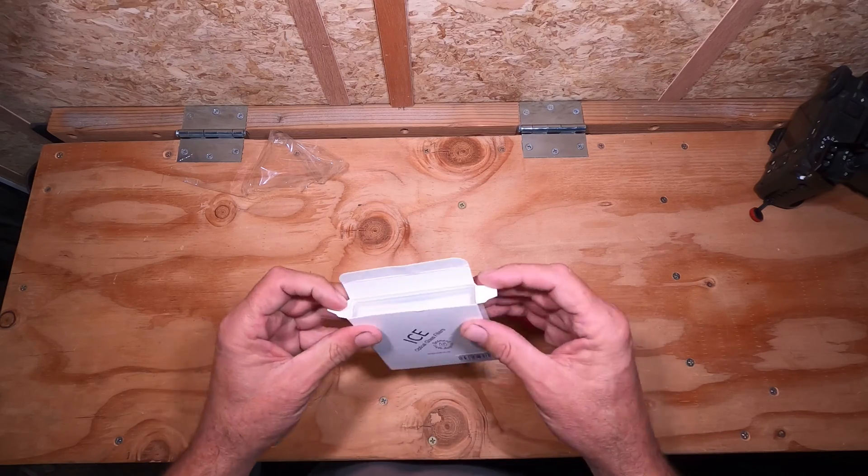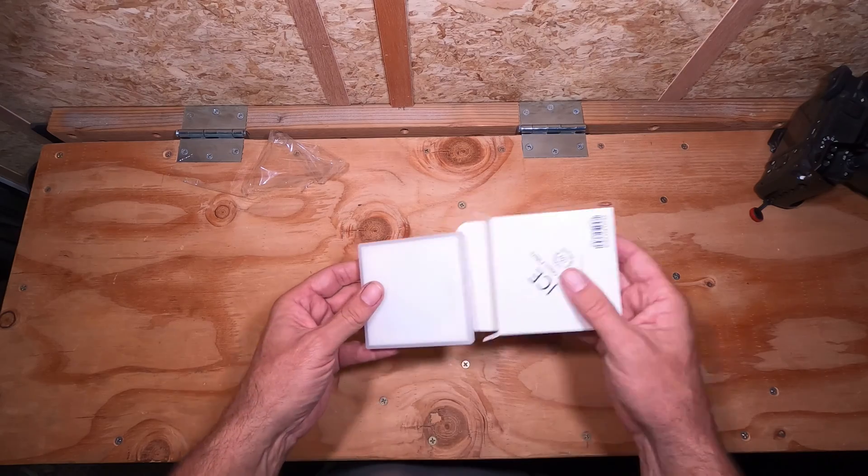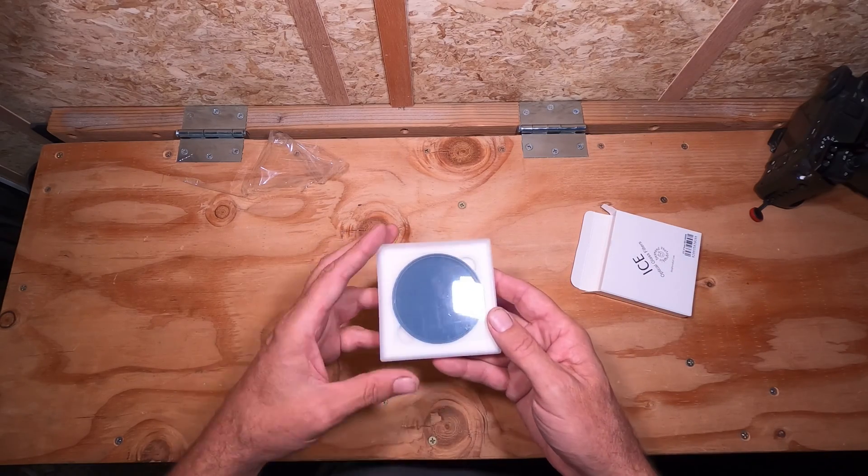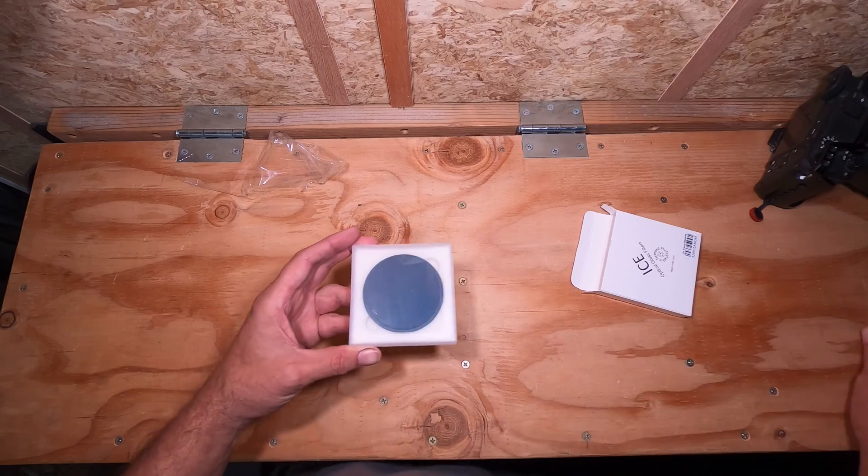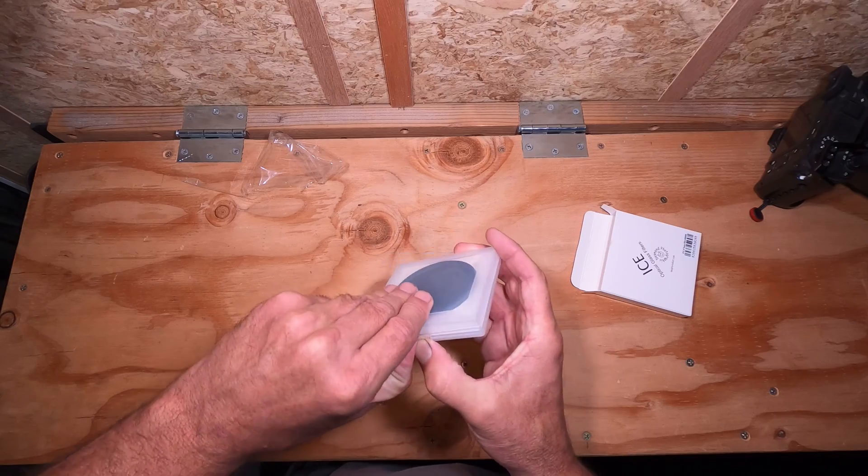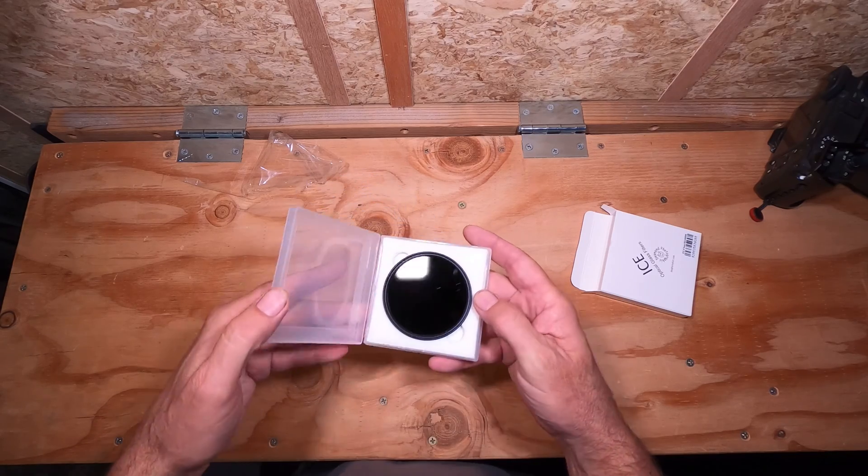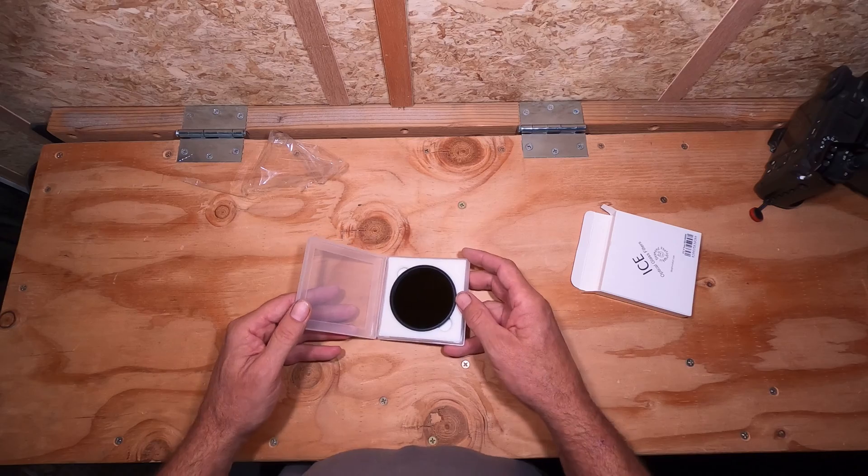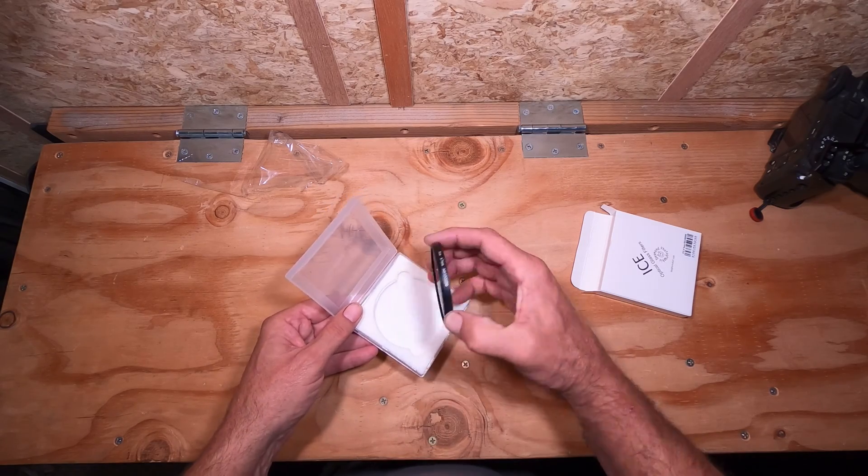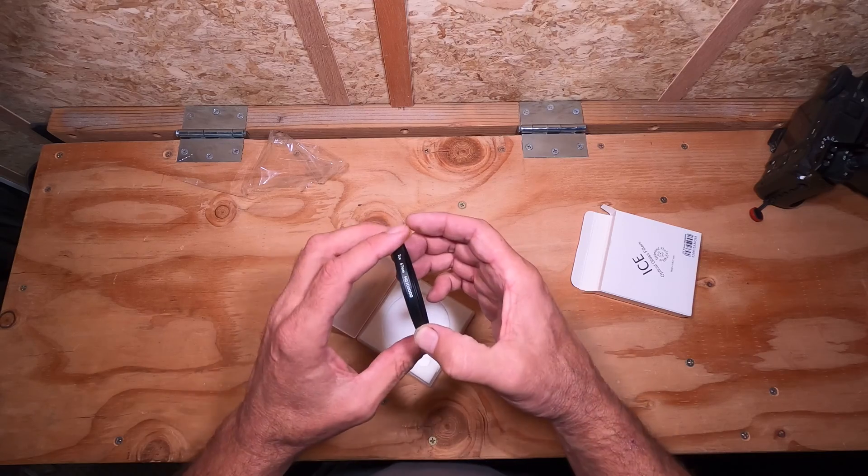Now this was the least expensive ND filter of this darkness that I could find and it was about $34-35 at B&H Photo online.